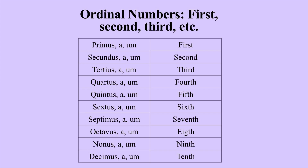Let's have a look at them — first through tenth: first: primus -a -um, second: secundus -a -um, third: tertius -a -um, fourth: quartus -a -um, fifth: quintus -a -um, sixth: sextus -a -um, seventh: septimus -a -um, eighth: octavus -a -um, ninth: nonus -a -um, and tenth: decimus -a -um.